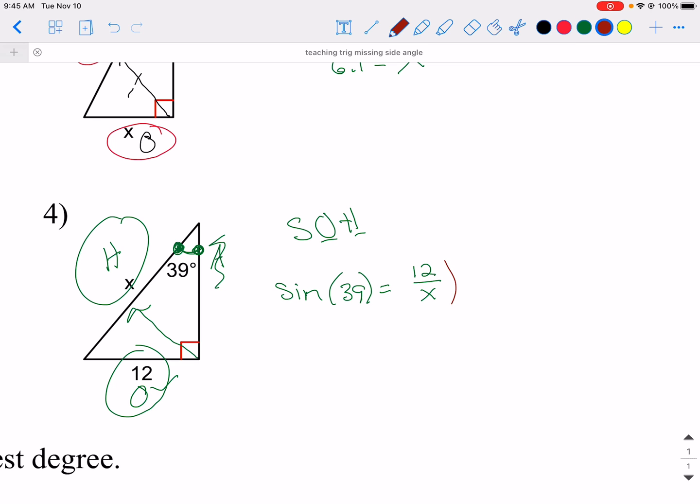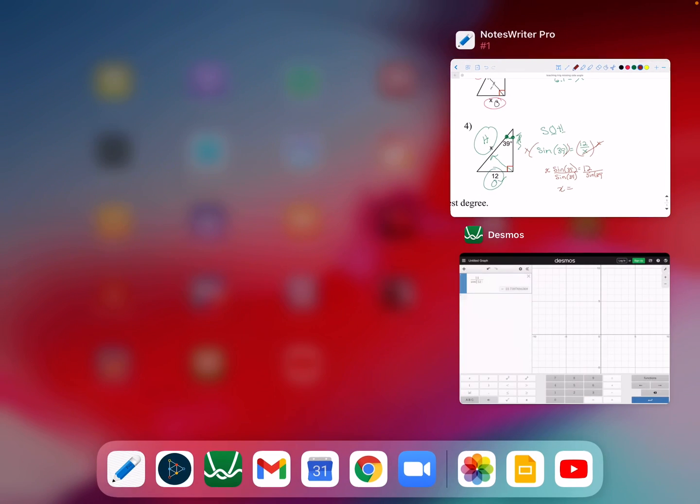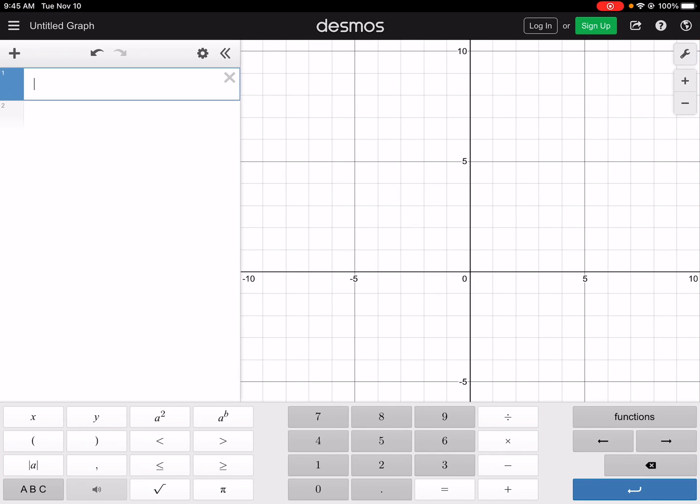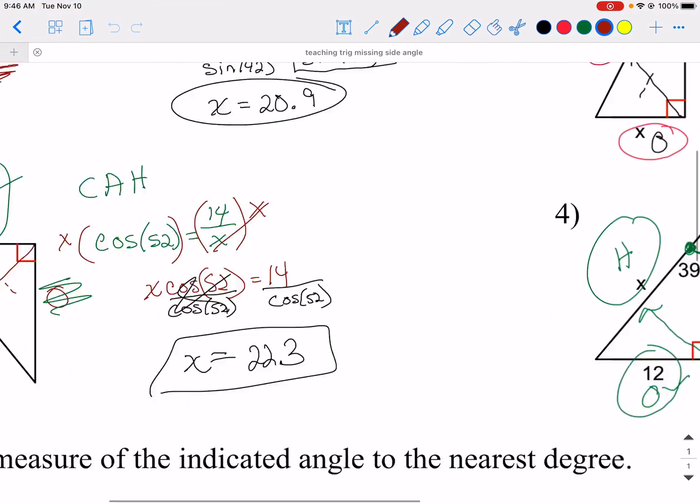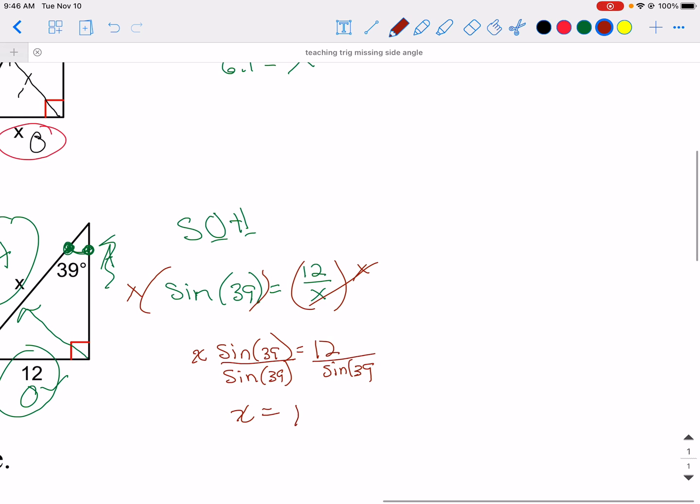Sine 39 equals opposite is 12 over X. How do you get rid of X? You multiply both sides by X. So, I have X sine 39 equals 12. Divide by sine 39 to get X by itself. Got to do it to the other side, too. So, X equals, okay, 12 divided by sine 39. So, I've got 12 divided by sine 39. And I get 19.1. 19.1 as my value there. So, X equals 19.1.